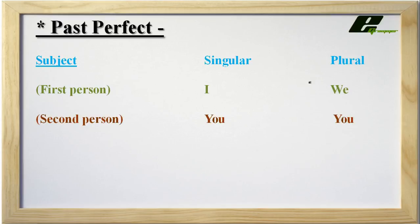Then comes second person. The second person means the person to whom we are speaking to. In singular 'you' and plural also 'you'. In singular 'you' it stands for one person and plural 'you' stands for more than one person.